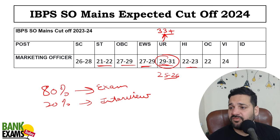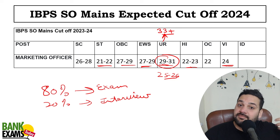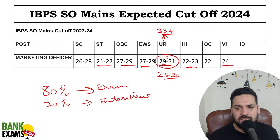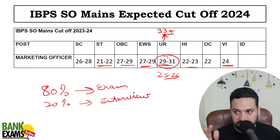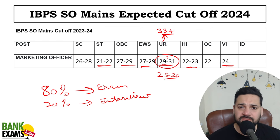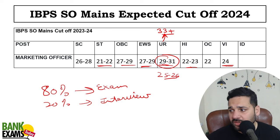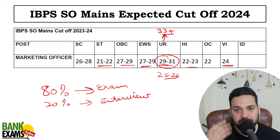The VI category cut-off is always around SC levels because scribes go with visually impaired candidates, and teachers charge money to be scribes. Many students who have already passed take relatives as scribes. This system is being heavily misused, which is why the cut-off is that high. Ideally, a visually impaired candidate's cut-off shouldn't go above 15-16, but it always reaches 25 — at par with SC/ST candidates.